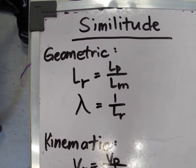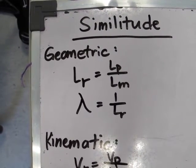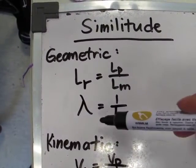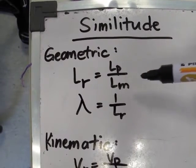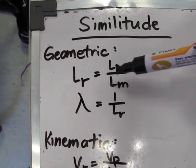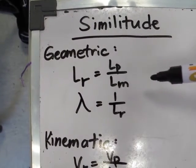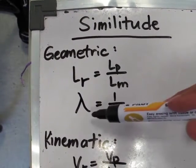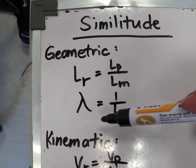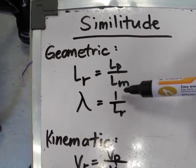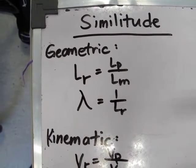Lambda, or the model ratio, is just the inverse of the scale ratio. So Lambda will just be equal to LM over LP.